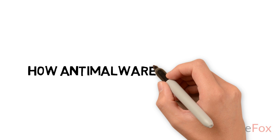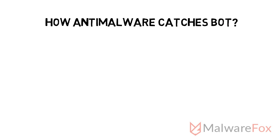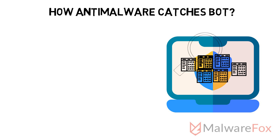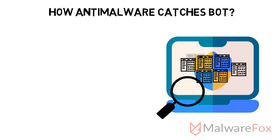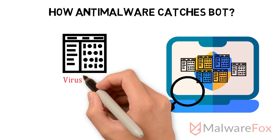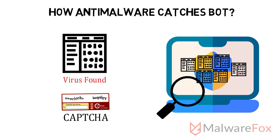How anti-malware catches bots: To catch bots, anti-malware analyzes the behavior of all programs. When it detects a repetitive action, it blocks that program. To stop bots on websites, users can take the help of CAPTCHA services to filter bots.